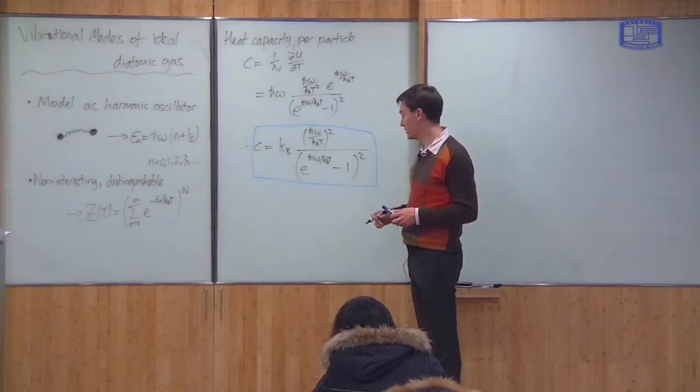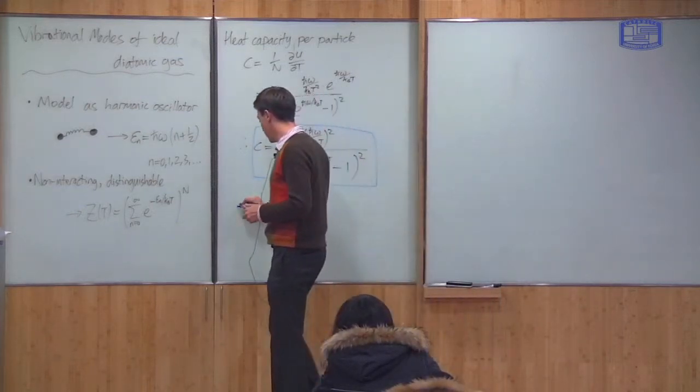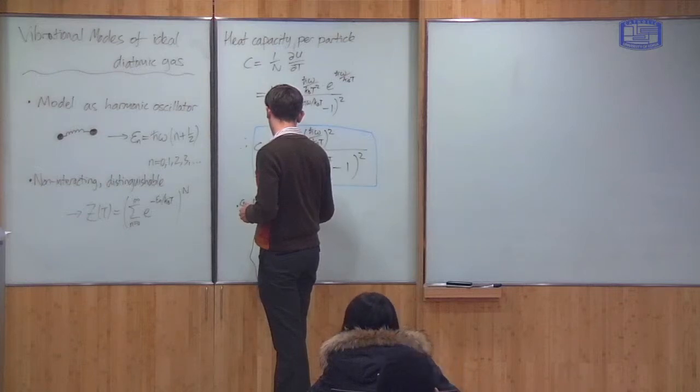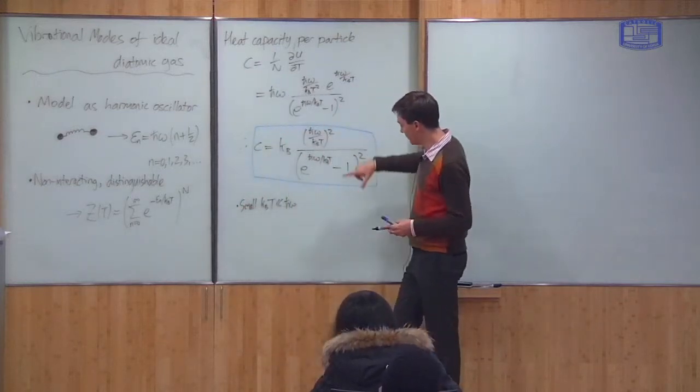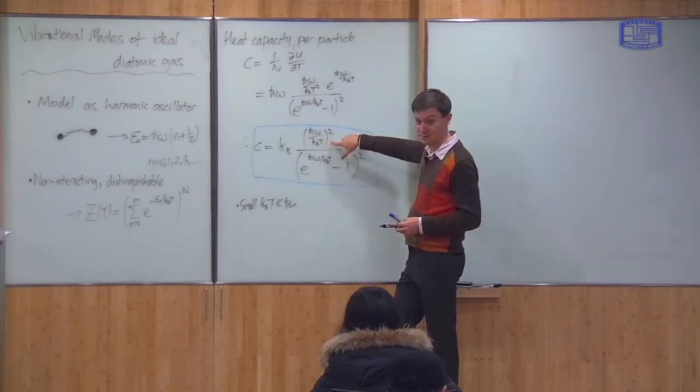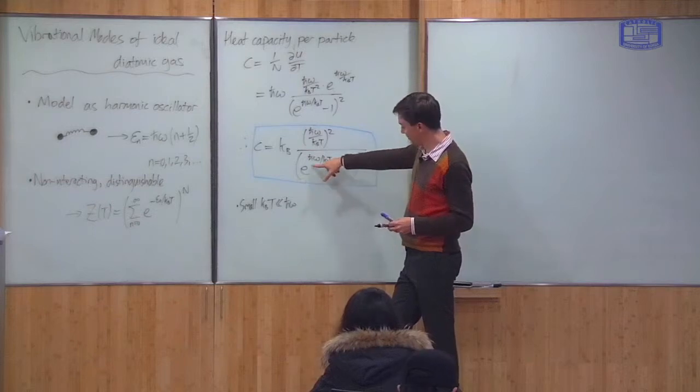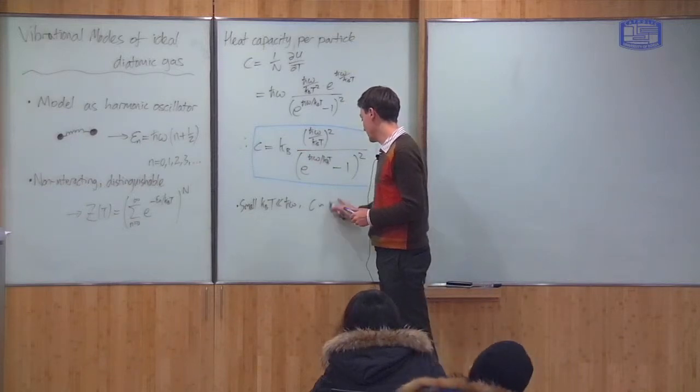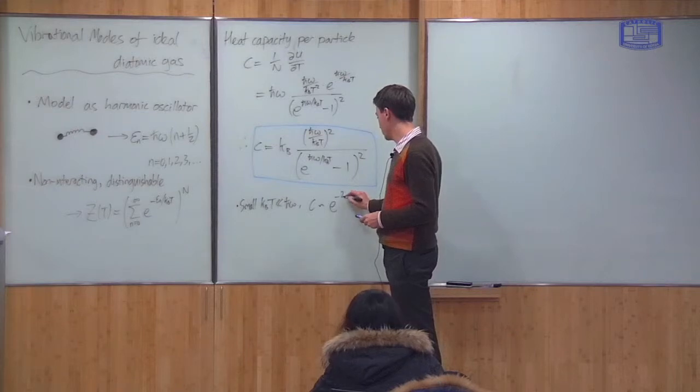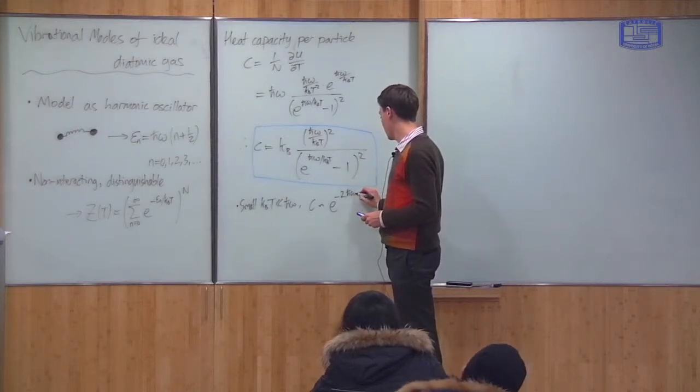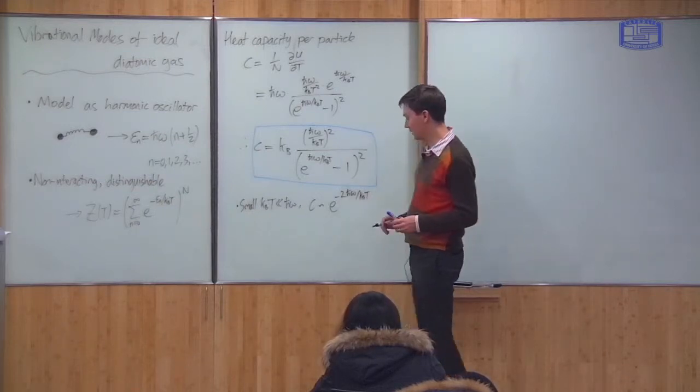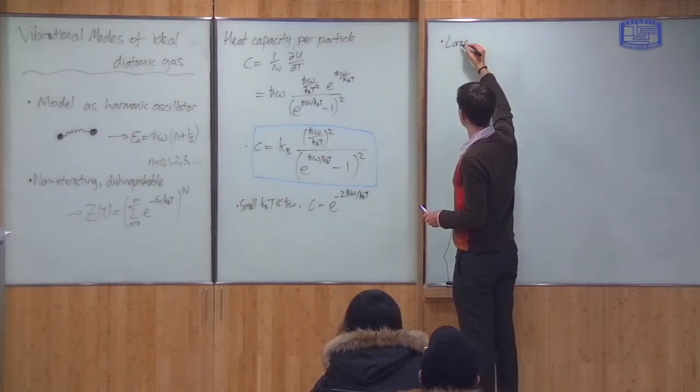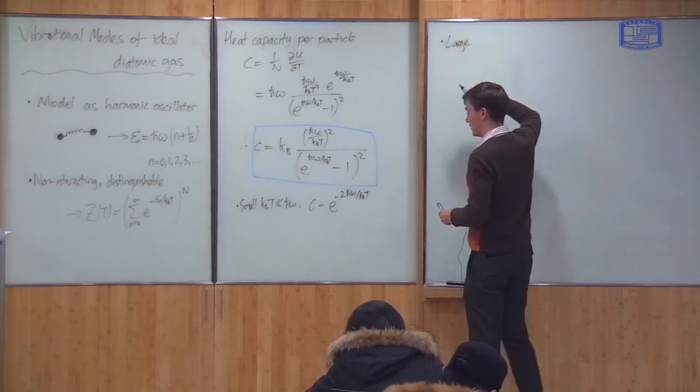So what does this function look like? Well, first of all, if T is small, so in other words, if k_B T is much less than h-bar omega, that means that this term, h-bar omega over k_B T, is very big. So this is a big number. But on the bottom, I've got the exponential of the big number. So this term wins. Therefore, the heat capacity is exponentially suppressed. It goes like e^(-h-bar omega/k_B T).